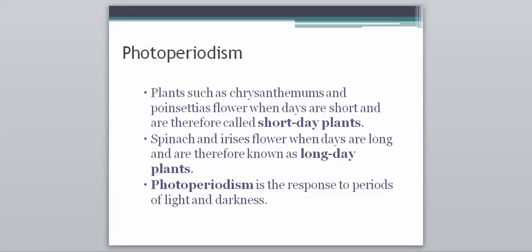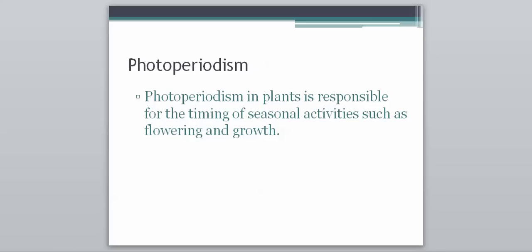The phenomenon that helps us understand this is known as photoperiodism — the response to periods of light and darkness, so it's how plants respond to when it's light and when it's dark. Photoperiodism in plants is responsible for the timing of seasonal activities such as flowering and growth.